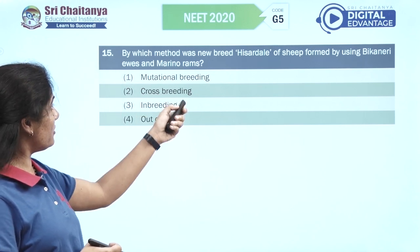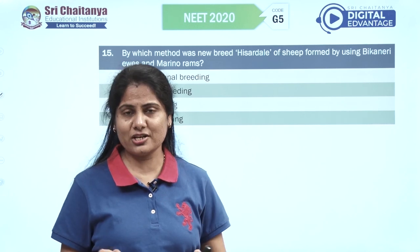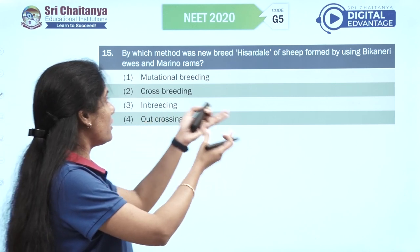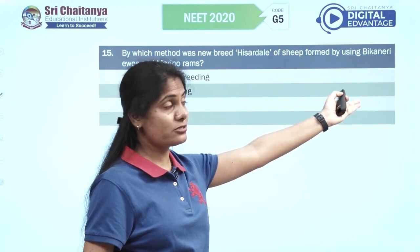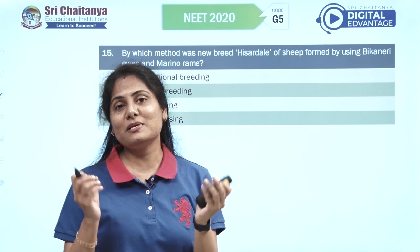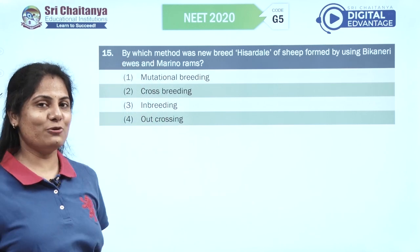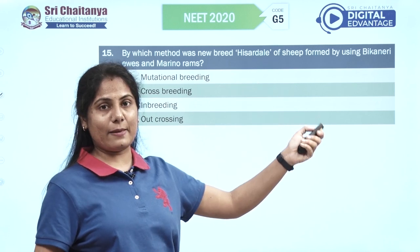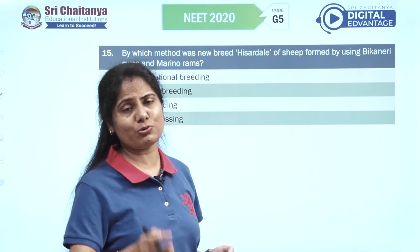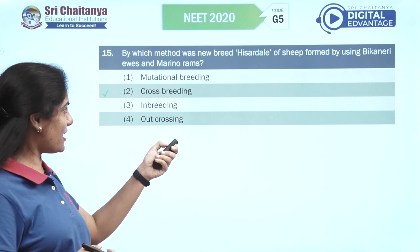By which method was new breed Hisserdale produced? Quite an easy question. Hisserdale is produced by crossing Bikaneri ewes and Merino rams — easy way to remember. Crossing them gives a crossbreed. Very easy question, hope you all agree. Option two is the right answer.